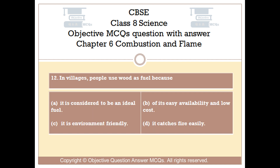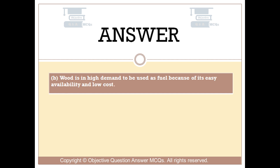Question number 12: In villages, people use wood as fuel because — Option A: it is considered to be an ideal fuel. Option B: of its easy availability and low cost. Option C: it is environment friendly. Option D: it catches fire easily. The right answer is Option B. Wood is in high demand to be used as fuel because of its easy availability and low cost.